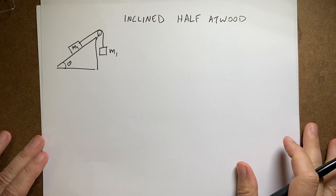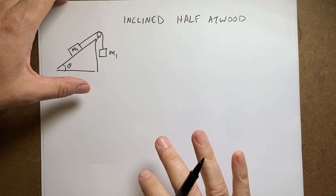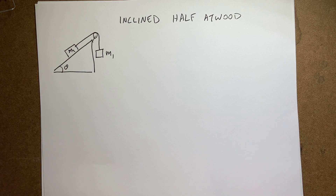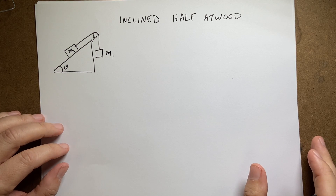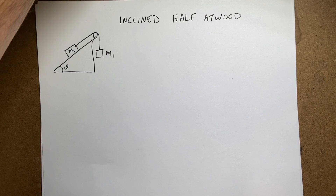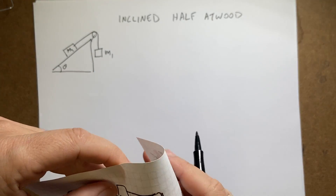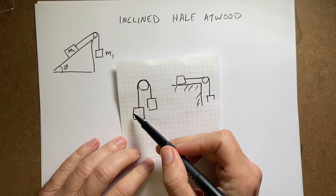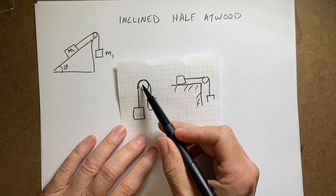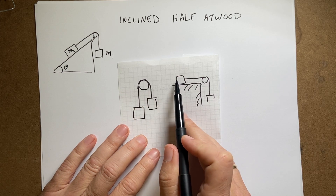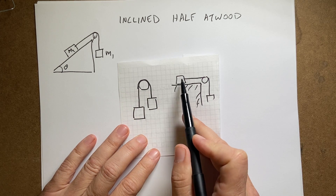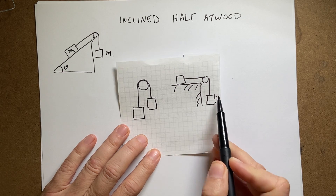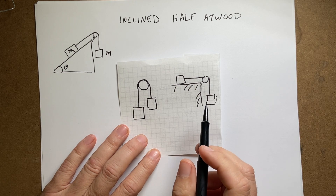I'm continuing my Atwood machine series. I'm calling this one the inclined half Atwood. So far I've done the normal Atwood machine — two masses over a massless pulley — and the half Atwood machine, which has a mass on a frictionless table and a mass hanging over the edge on a frictionless, massless pulley. Now it's the same thing except the table is not flat.